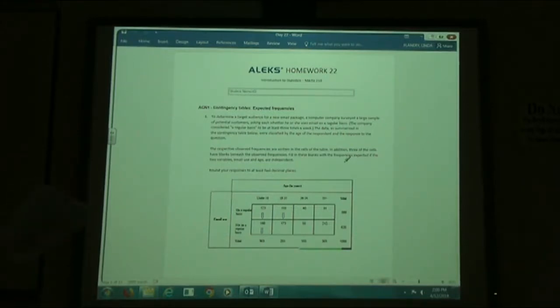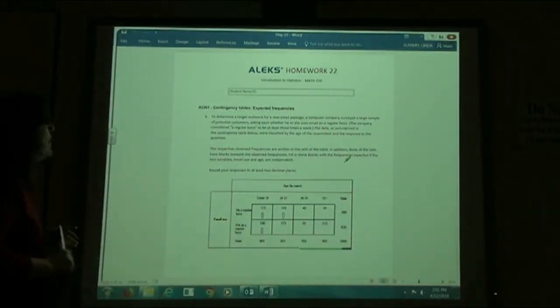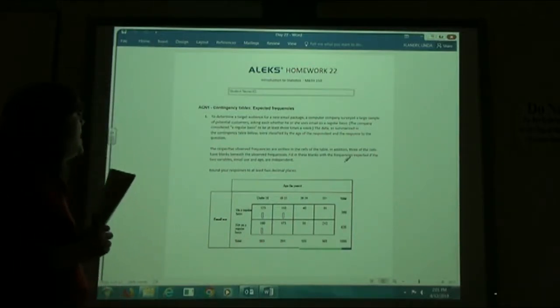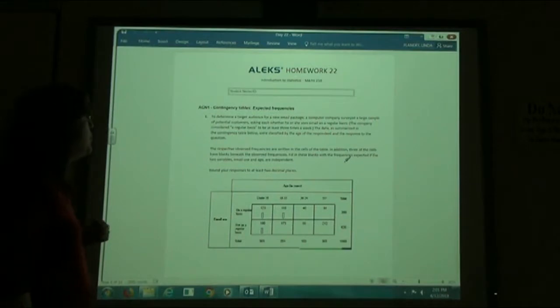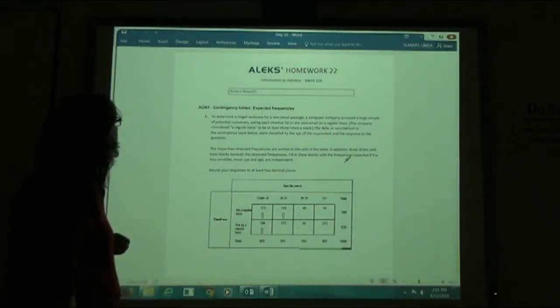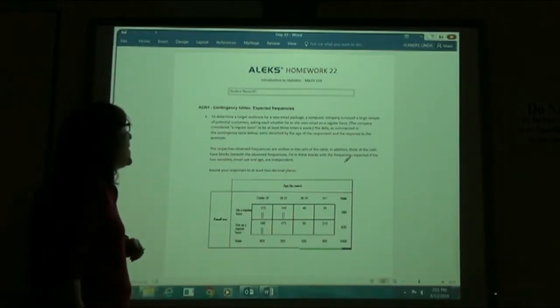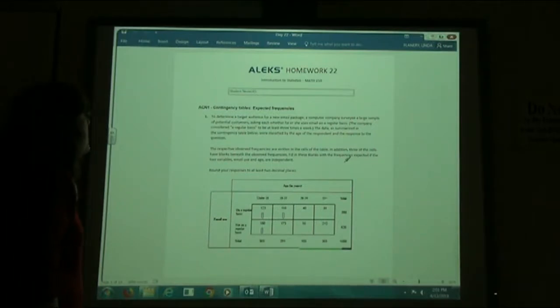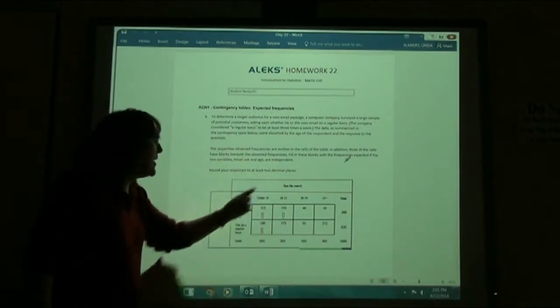First of all, they're going to have us fill in a contingency table based on what the expected frequencies are. It says to determine the target audience for a new email package, a computer company surveyed a large sample of potential customers, asking each whether he or she uses email on a regular basis. The company considered a regular basis to be at least three times a week. The data were classified by the age of the respondent and the response to the question. Fill in the blanks with the frequencies expected if the two variables, email use and age, are independent. Round your answer to two decimal places.